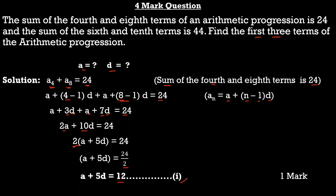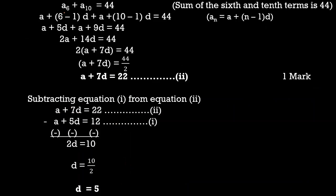You get one mark for finding the first equation: a + 5d = 12. Now moving to the second condition: the sum of the sixth and tenth terms is 44.